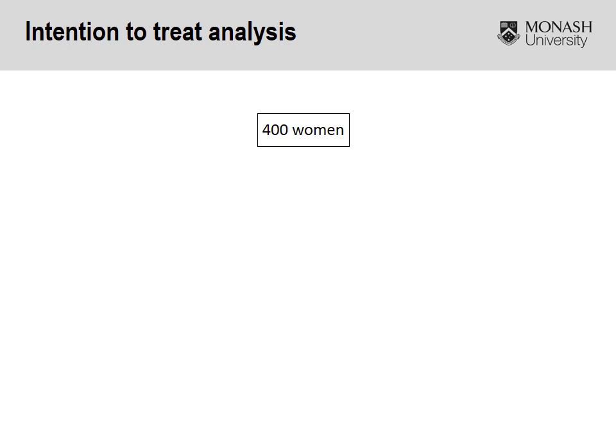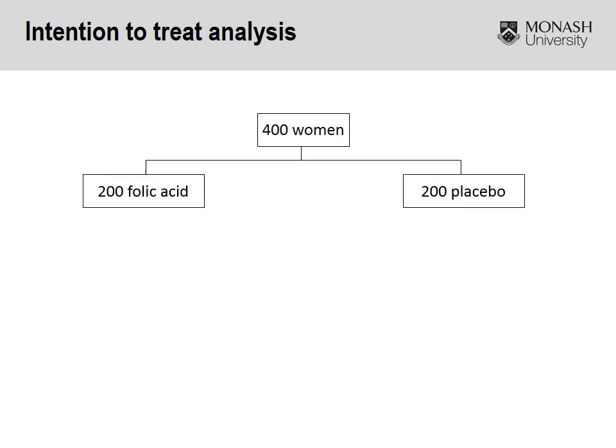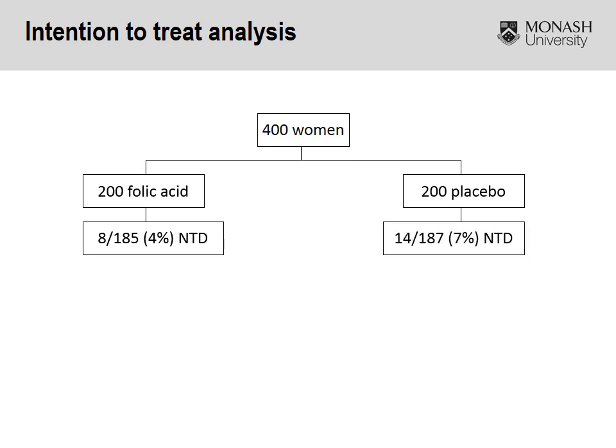In this slide we're going to delve deeper into intention-to-treat analysis. We start with 400 women, 200 each randomised to folic acid and placebo. In the folic acid group, 185 are followed up, of which 8 have an NTD-affected pregnancy, compared to 187 followed up in the placebo group, of which 14 have the outcome of interest. Calculating the relative risk — 4% divided by 7% — gives a relative risk of 0.6. This is a per-protocol analysis because we don't know why the 15 people in the folic acid group and 13 people in the placebo group dropped out.